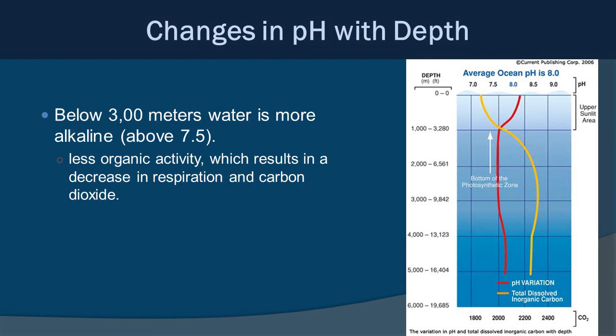Below 3,000 meters, the water is again more alkaline, above pH 7.5. This is because there is less organic activity, resulting in decreased respiration and lower carbon dioxide concentrations in general.